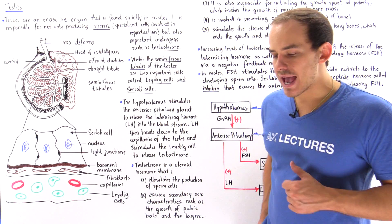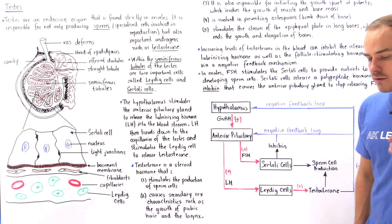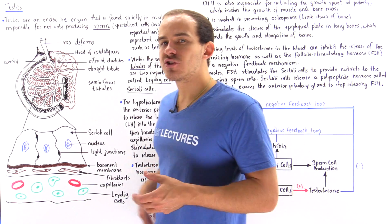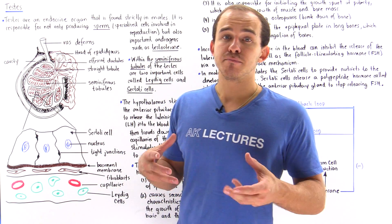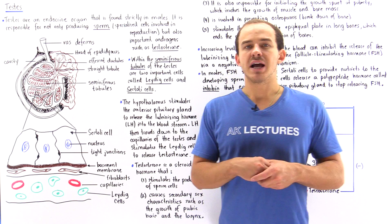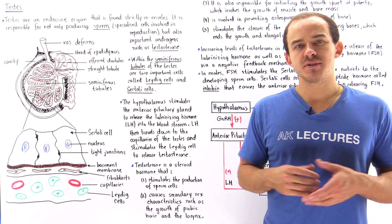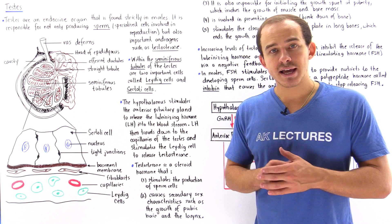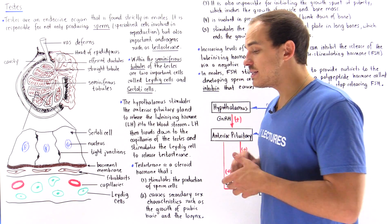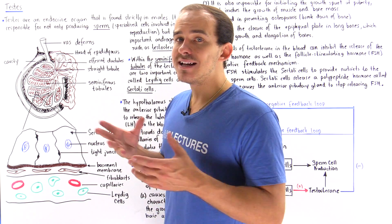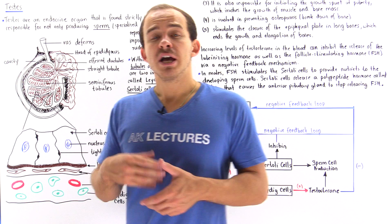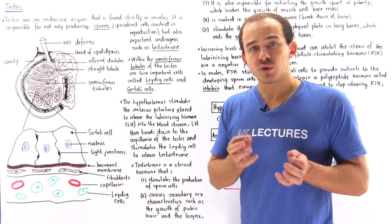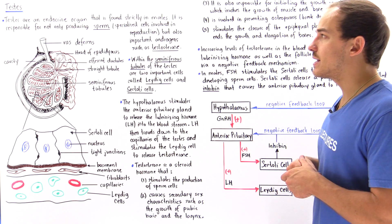The male gonads are known as testes, and testes have two very important roles. Firstly, they play a role as a reproductive organ, meaning they produce specialized cells known as sperm cells that are involved in human reproduction. And secondly, testes also play a role as an endocrine gland, meaning they are capable of releasing and producing specialized hormones that are required by our body.